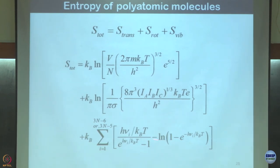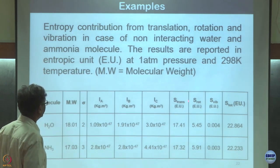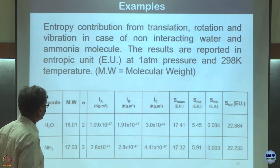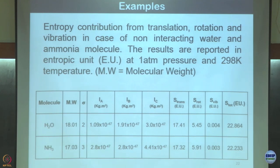The entropy of a polyatomic molecule is the sum of translational (Sackur-Tetrode), rotational, and vibrational contributions. For water, the translational entropy is about 17 cal/mol·K, and the rotational entropy is 5.45 — about 30 percent of the translational entropy. Vibrational entropy is negligible at room temperature.